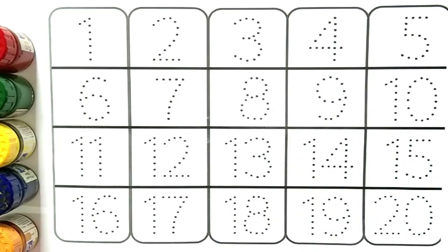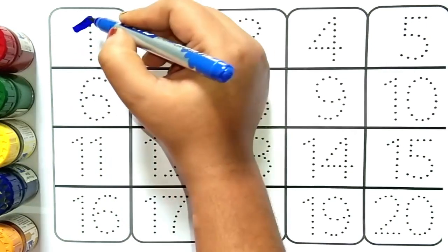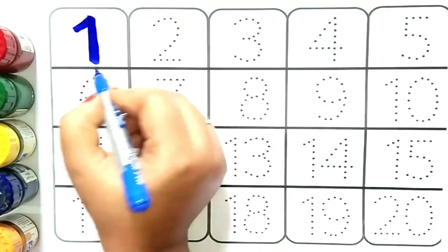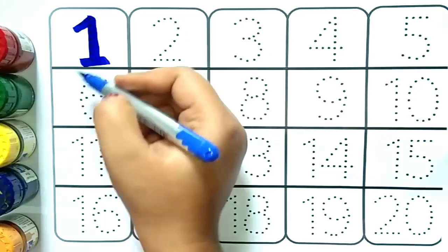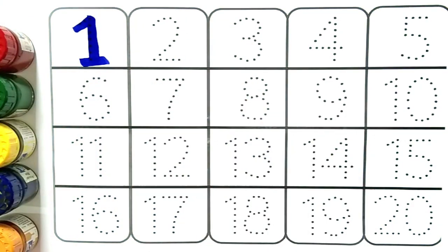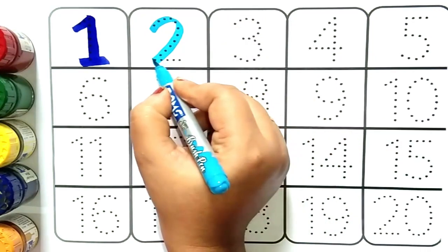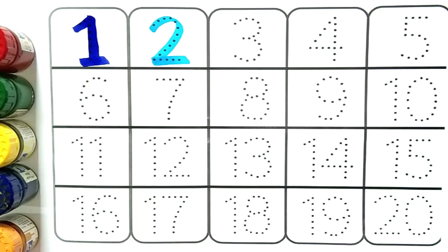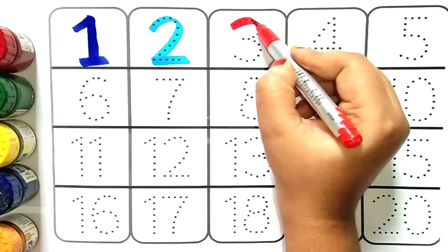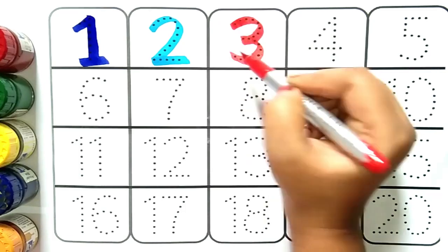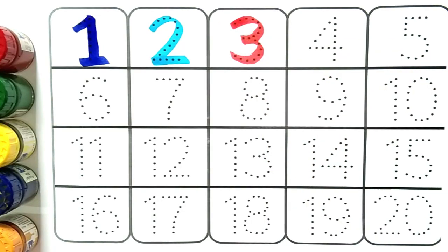Let's start writing. This is number one. What is it kids? This is number one. After one comes two. This is number two. What is it kids? This is number two. After two comes three. This is number three. What is it kids? This is number three.